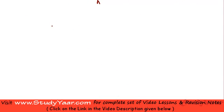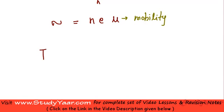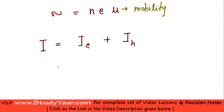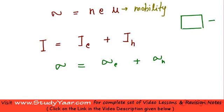Conductivity is given by n times e times mu, where n is the number of free electrons, e is the charge, and mu is the mobility. In a semiconductor, current is due to free electrons as well as holes. Therefore the net conductivity equals the conductivity due to free electrons plus the conductivity due to holes.